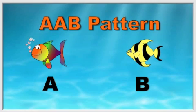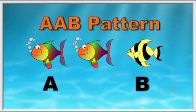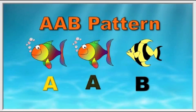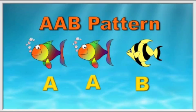Something is not right. This pattern says AAB. Something is missing. I know — we need another rainbow fish. That would be the letter A. So now we have an AAB pattern. The two rainbow fishes make A, and the stripe makes B.